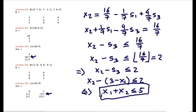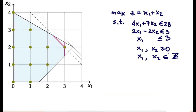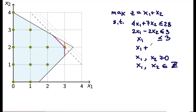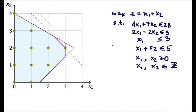We add the new cut x1 + x2 ≤ 5 to the previous model. Looking at the LP relaxation after adding this cut, we see that it now has two alternative optimal extreme point solutions and infinitely many in between. One of the optimal solutions is now integer: x1 = 3 and x2 = 2.